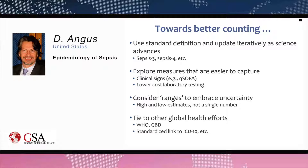By codifying acute organ dysfunction as a rise of two new SOFA points, you could actually get more consistent reporting of organ dysfunction. The existing criteria for ICD-9 and ICD-10 codes for organ dysfunction have been more vague. So Sepsis-3 definitions could be used to have a more standardized way of codifying clinically in the chart the organ dysfunction that leads to assigning an administrative code. But it won't happen on its own — groups responsible for coding would need to make the decision to rely on SOFA for acute organ dysfunction.